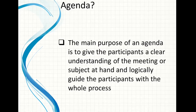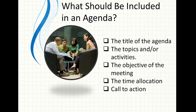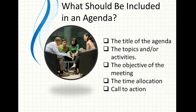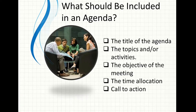We have certain things that should be included in an agenda. Number one, we have the title of the agenda. The title is important in any agenda as it can be used as identification of the particular agenda. Then we have topics or activities — the agenda should list all the topics or activities to be discussed in the meeting. The objective of the meeting should also be included.